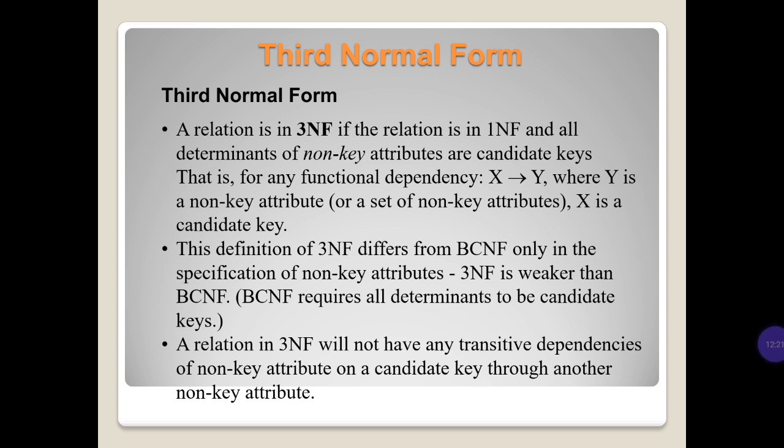Third normal form: a relation is in 3NF if the relation is in 1NF and all determinants of non-key attributes are candidate keys. That is, for any functional dependency X → Y where Y is a non-key attribute, X is a candidate key. This definition of 3NF differs from BCNF only in the specification of non-key attributes — 3NF is weaker than BCNF. BCNF requires all determinants to be candidate keys. A relation in 3NF will not have any transitive dependencies of non-key attributes on a candidate key through another non-key attribute.